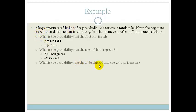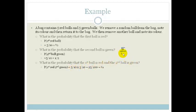What is the probability that the first ball is red and the second ball is green? We multiply five over ten by five over ten, which is 25 over 100. Written as a fraction: five over ten times five over ten equals 25 over 100, which equals a quarter. Or we could have just gone a half times a half. So the probability that the first ball is red and the second ball is green is a quarter.